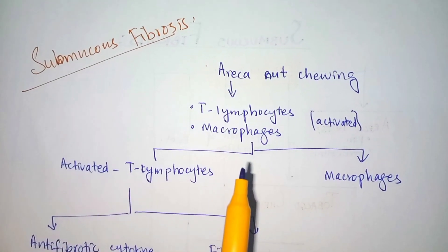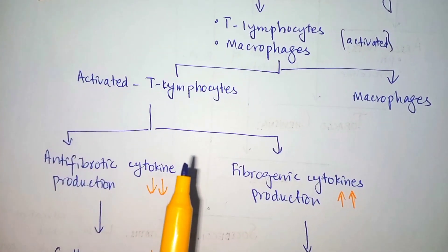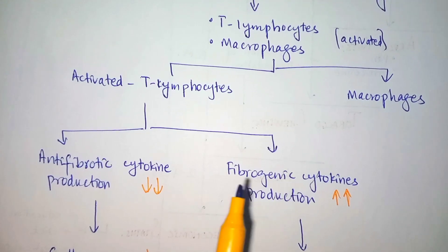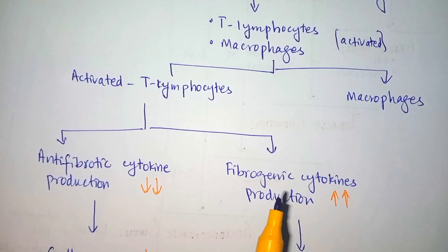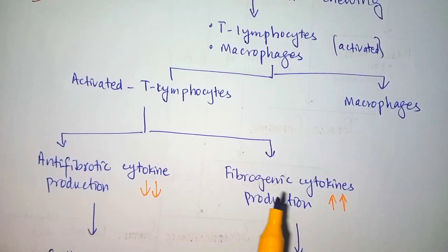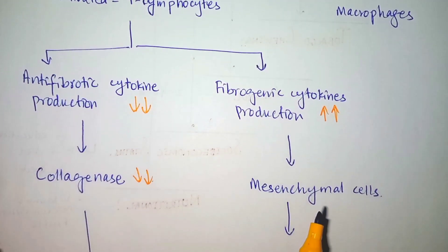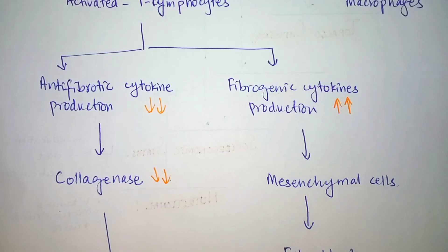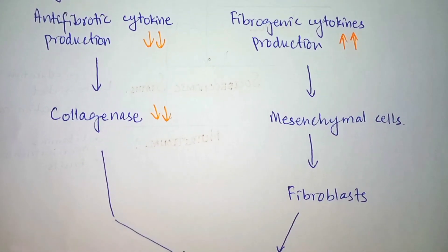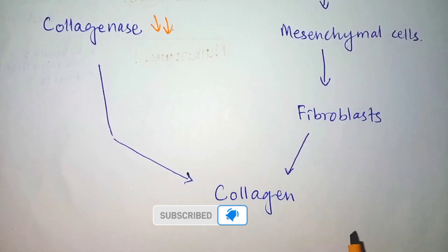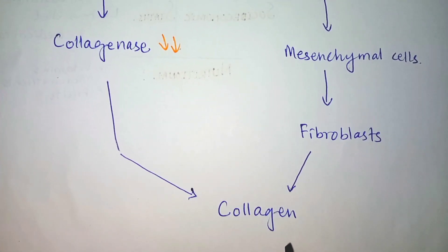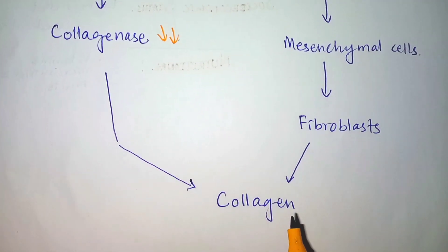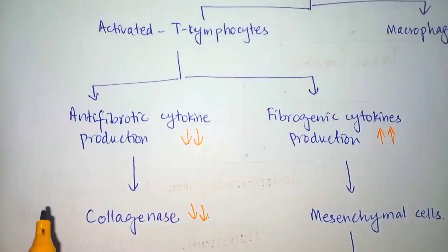The activated T lymphocytes contribute by two mechanisms: reduction of anti-fibrotic cytokine production, and increased production of fibrogenic cytokines. Activated macrophages and T lymphocytes produce fibrogenic cytokines which act on mesenchymal cells. These mesenchymal cells increase the proliferation of fibroblasts, ultimately resulting in increased production of collagen, which deposits in the sub-epithelial connective tissue of the oral mucosa, resulting in submucous fibrosis.